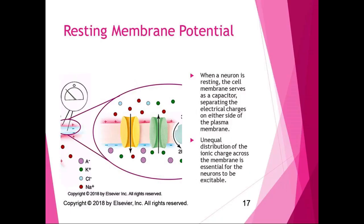When a neuron is resting, the cell membrane serves as a capacitor separating electrical charges on either side of the plasma membrane. The unequal distribution of ionic charge across the membrane is essential for neurons to be excitable. Typically the difference in electrical charge from inside to outside is about 70 millivolts, and ions diffuse from high concentration to low concentration.